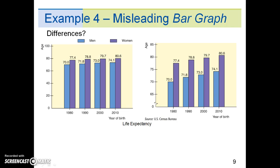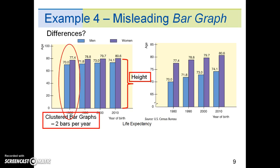Take a look at the two bar graphs below. Do you notice any differences? There are a few things to note. First, the height of each bar represents the life expectancy in years. The graphs are called clustered bar graphs because there are two bars for each year of birth. One bar represents the life expectancy for men and the other represents the life expectancy for women.